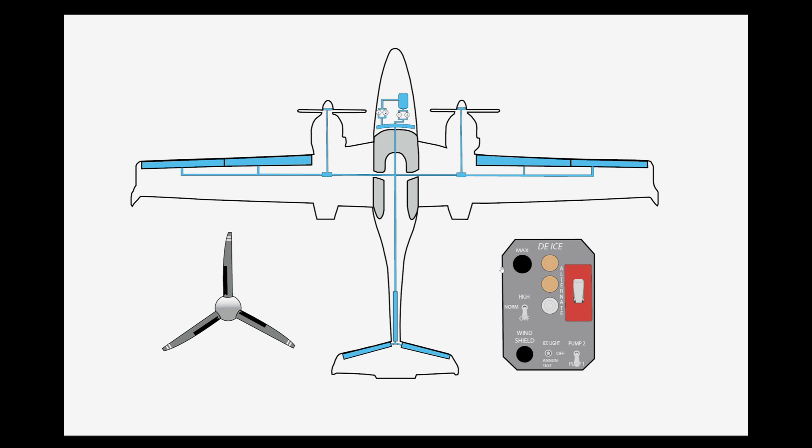It's kind of two separate systems. There is a windshield de-ice system that uses this bar right here with a number of nozzles that sprays de-ice fluid onto the windshield, and two electric pumps for that system. The other part is the prop and airframe de-ice, which has another set of two electric motors that distribute the glycol-based de-ice fluid.